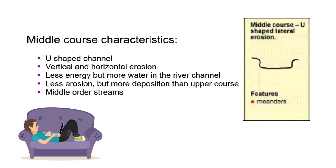Next up, the middle course — I think this is a teenager lying on the couch: sometimes lazy, sometimes has lots of energy. The channel here is U-shaped. Looking at this diagram, I would prefer this was a deeper sort of U-shape. The reason it's U-shaped is because now we have vertical and horizontal erosion. There's less energy here, but there's more water now in the river. This is the middle-order stream — sort of your threes and fours.